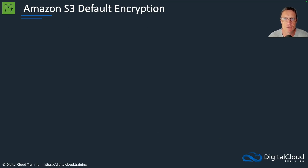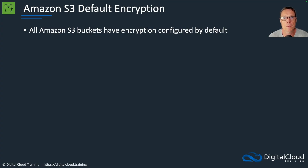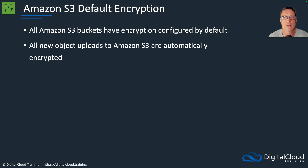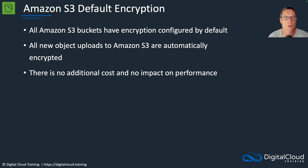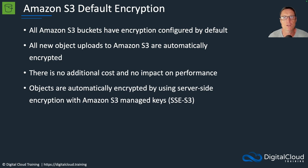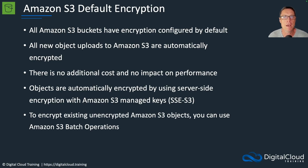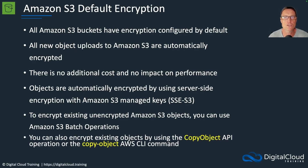S3 has default encryption, which means that all S3 buckets are encrypted by default. All new object uploads to S3 are automatically encrypted with no cost or performance impact. Objects are automatically encrypted using server-side encryption with S3 managed keys. There may be unencrypted objects in a bucket for files that existed in S3 prior to default encryption being put in place, if you didn't manually enable encryption. You can use batch operations, the copy object API, or the copy object CLI command to encrypt those objects.